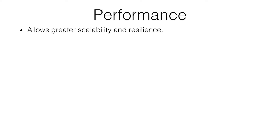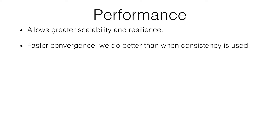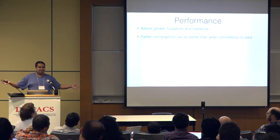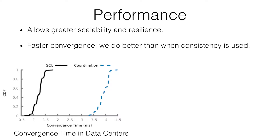In terms of why we did this, we wanted to get better performance — better scalability and better resilience. But another thing you might want is faster convergence. People say that if all controllers are consistent, the data plane will converge faster. What we actually found is this is not true. SCL, the system we built, often responds quicker than any consistent mechanism can.